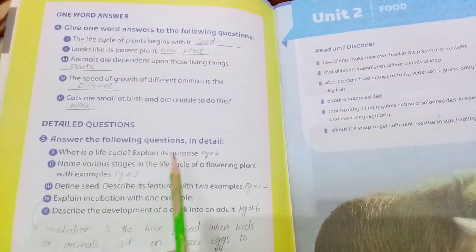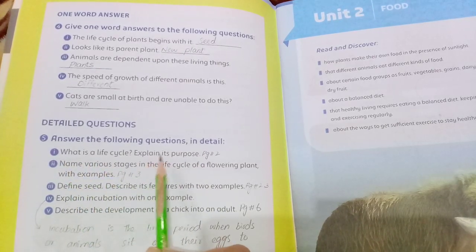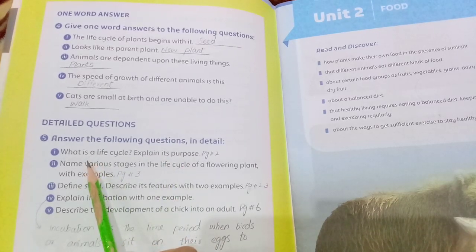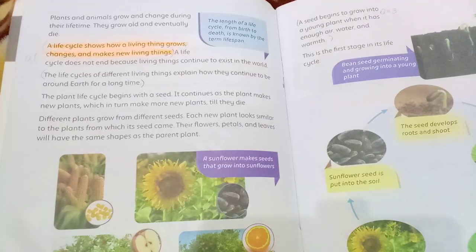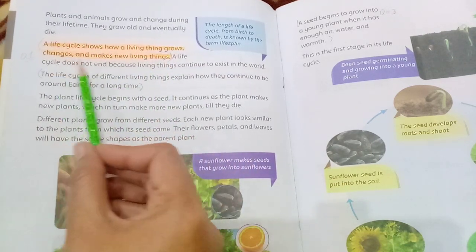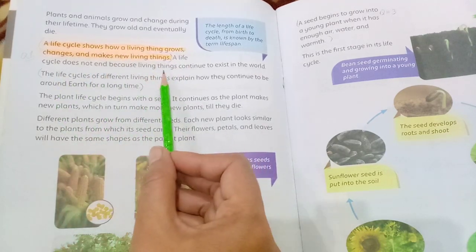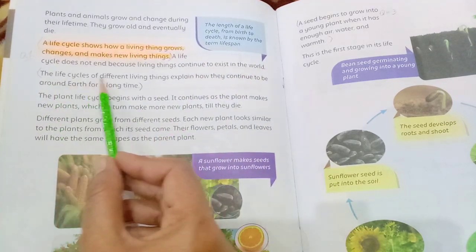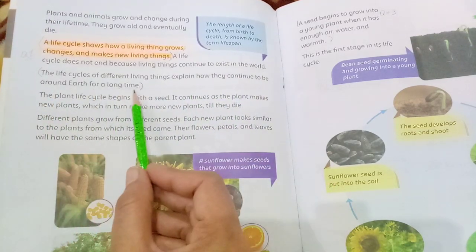Answer the following questions in detail. Question number one: what is a life cycle? Explain its purpose. The life cycle does not end because living things continue to exist in the world. The life cycles of different living things explain how they continue to be around on Earth for a long time.